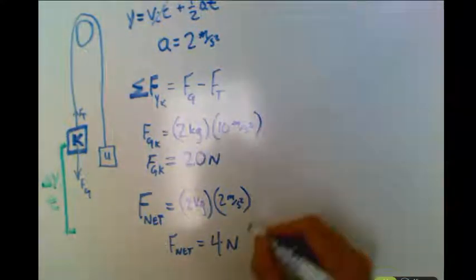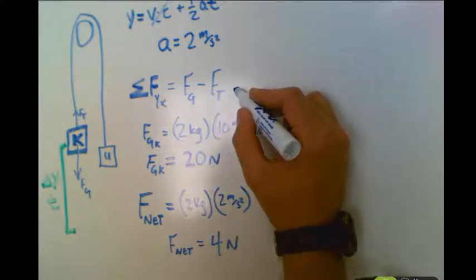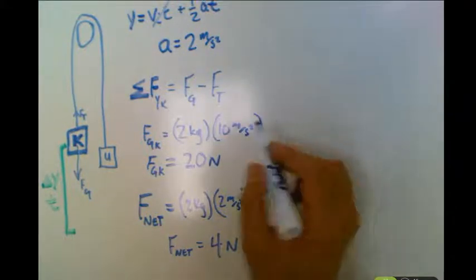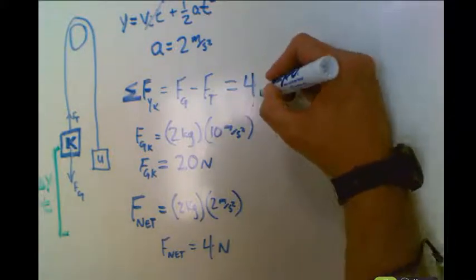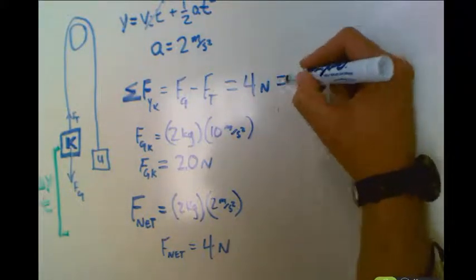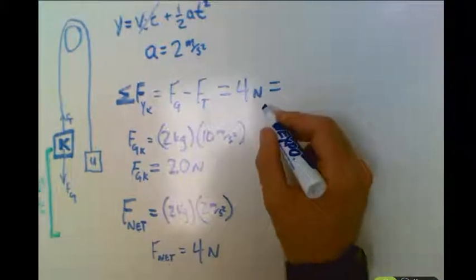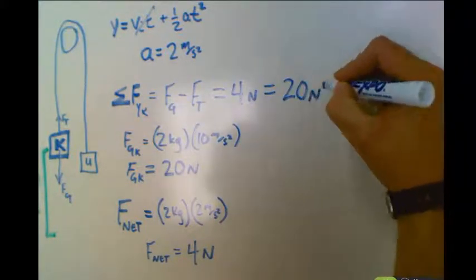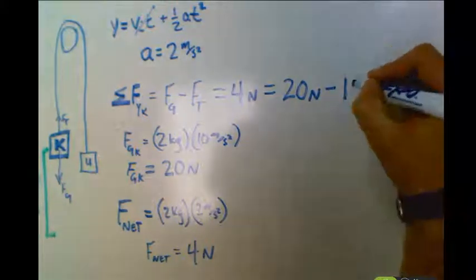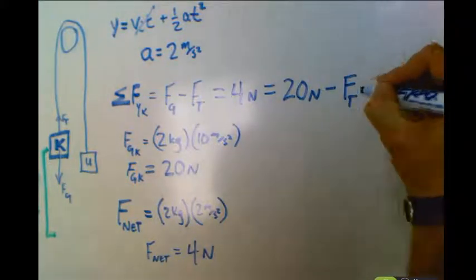So we're going to come back up here to our sum of the forces and we're going to say, okay, if we need to get 4 newtons in the end, that's got to equal gravity, which was 20 newtons, minus the force of tension.